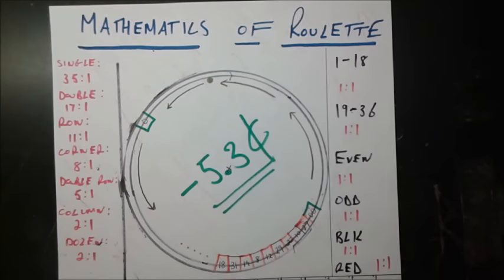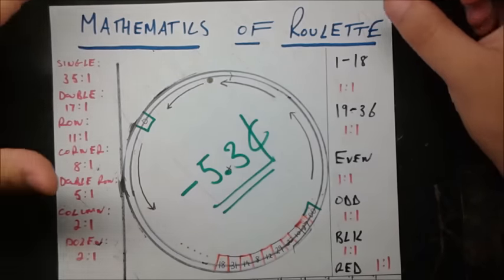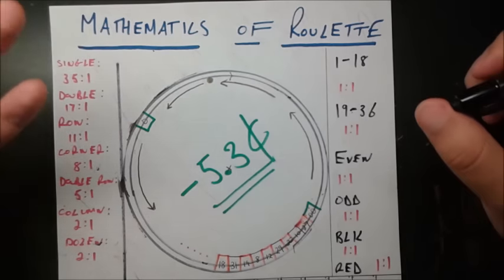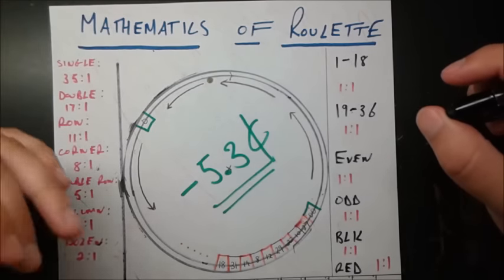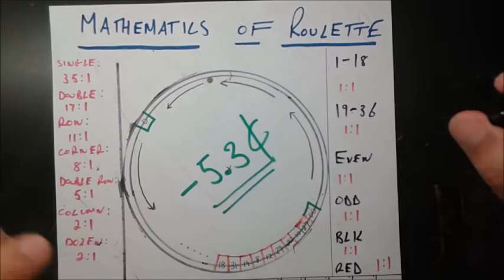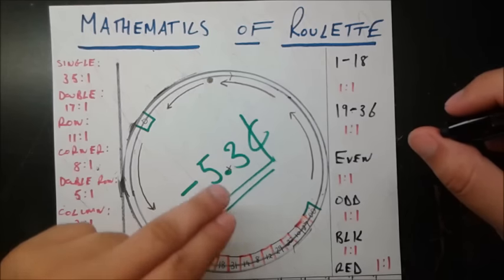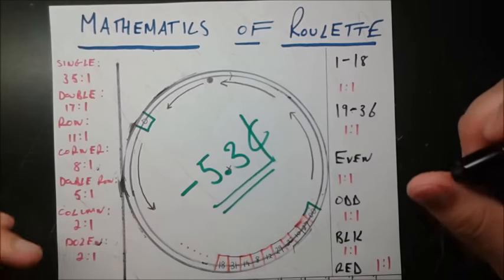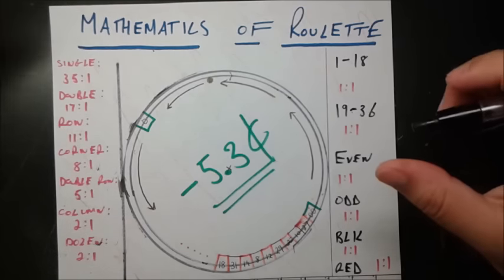In this video, we'll be looking at the mathematics of the casino game called roulette. A lot of people are familiar with roulette, but we can just review all the rules, and then we'll go into the math and see why it's very disadvantageous to ever even play this game. Because in the long run, you'll be losing negative 5.3 cents. We'll see this number come up over and over again as we do a few test cases. But first, let's just explain the basic rules.